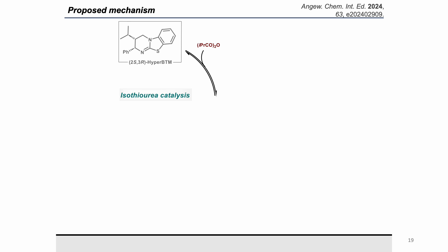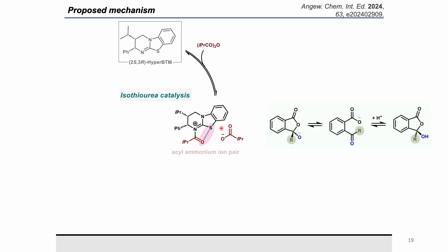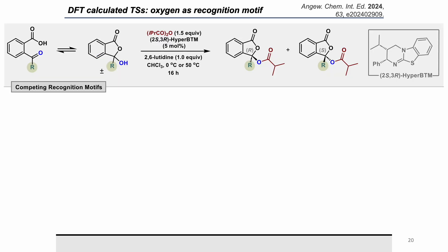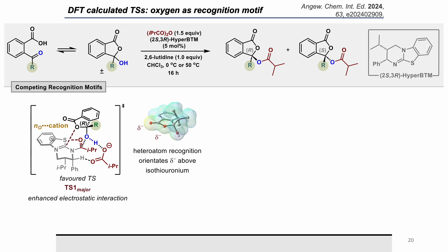A simplified general mechanism of this DKR process was drawn: first, nucleophilic attack of the Hyper-BTM catalyst on the anhydride forms the acyl ammonium intermediate, which is cationic in nature. This intermediate preferentially reacts with the fast-reacting enantiomer of the alcohol to form the acylated product, with the catalyst regenerated by base. To understand factors leading to high enantioselectivity, we probed the interaction between the substrate's pi system as well as the oxygen heteroatom lone pair interaction with the cationic intermediate. The oxygen-sulfur chalcogen bonding acts as a conformation lock.